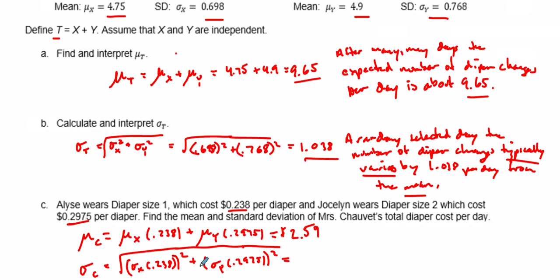We're going to take 0.698 times 0.238, square it, add that to our other standard deviation 0.768 times 0.2975, and then we've got to square that. What we typically get is 0.282. So typically varies by about 28 cents. 28 cents is a typical variation of the cost for these twins per day.